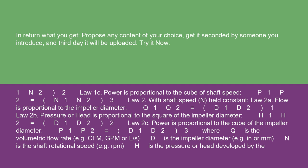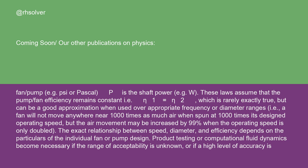GPM or L/s. D is the impeller diameter, e.g. in or mm. N is the shaft rotational speed, e.g. RPM. H is the pressure or head developed by the fan/pump, e.g. psi or Pascal. P is the shaft power, e.g. W.